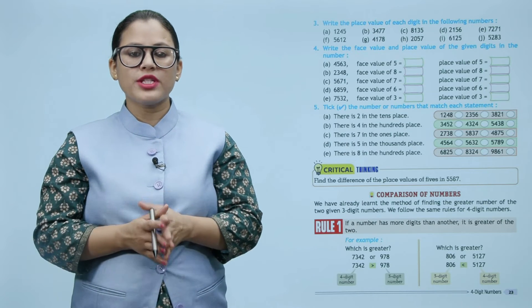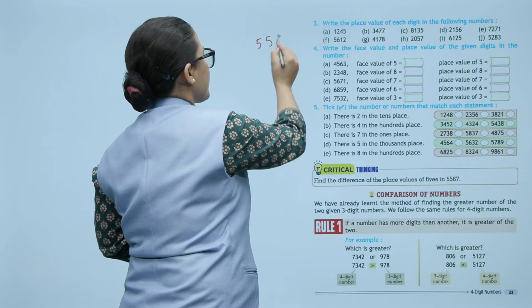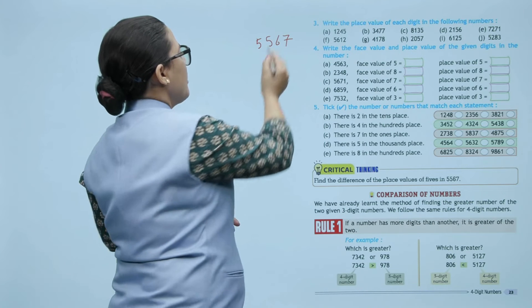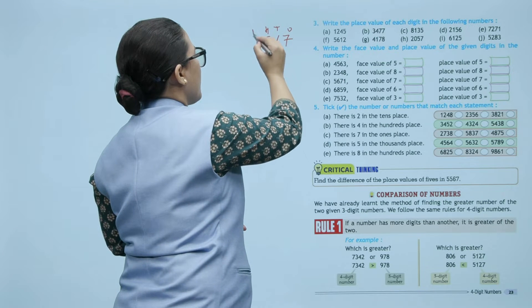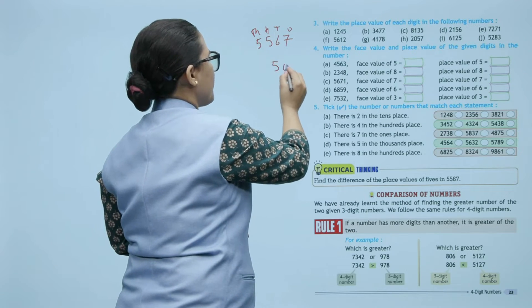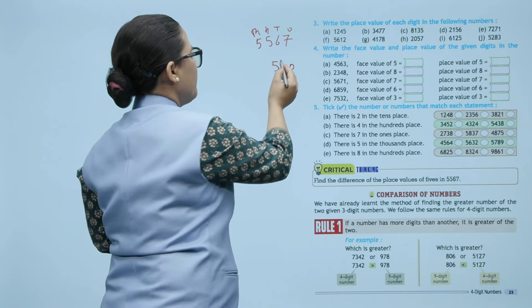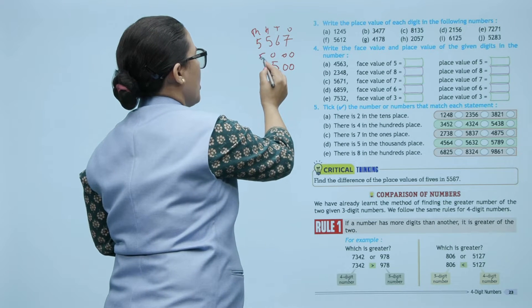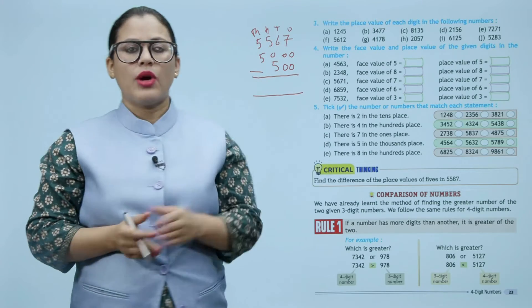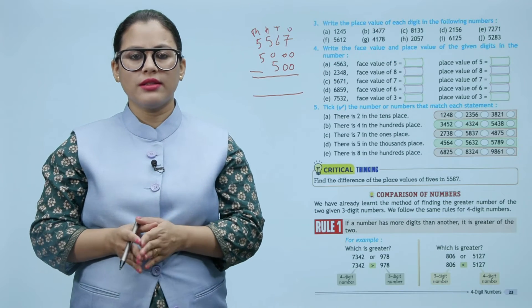Critical thinking: Find the difference of the place values of 5's in 5567. Aapko ek number diya gaya hai 5567. Dono 5's ki place values ka difference nikalna hai. Ones, tens, hundred, thousand — yeh 5 hai aapke hundreds place pe, toh iski place value hogi 500. Aapka doosra jo 5 hai woh thousands place pe hai, toh uski place value hogi five thousand. Aur aapko difference nikalna hai, that means 5000 minus 500.